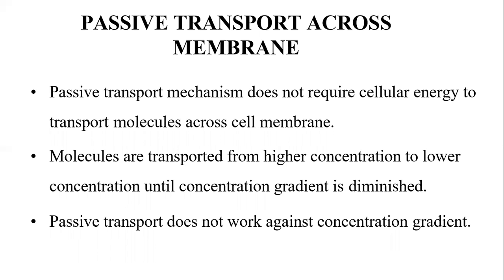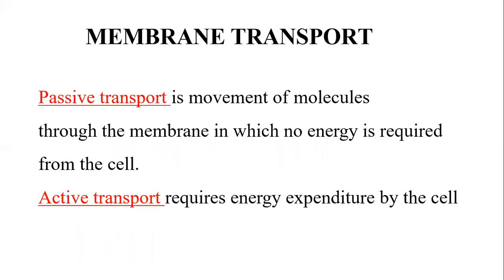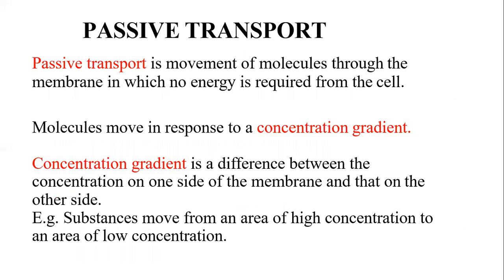Passive transport does not work against the concentration gradient and has no energy requirement. Concentration gradient is the difference between concentration on one side of the membrane and the other. For example, when cells need oxygen, outside oxygen concentration is higher and inside is lower, so oxygen moves into the cell through passive transport simple diffusion. Similarly, carbon dioxide concentration increases inside the cell and decreases outside, so carbon dioxide diffuses out through diffusion.